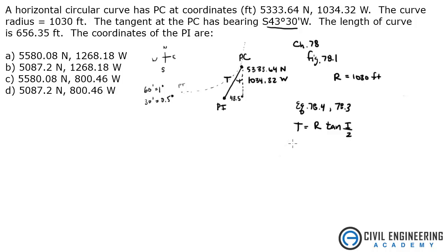And that tells me that the tangent is equal to the radius times the tangent of i over 2. Well, we don't know what i is, but this next equation, 78.3 tells us that, well, not i, tells us that L is equal to 2 pi R i over 360.